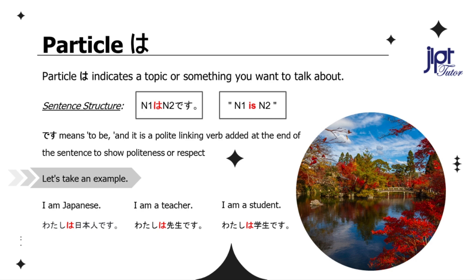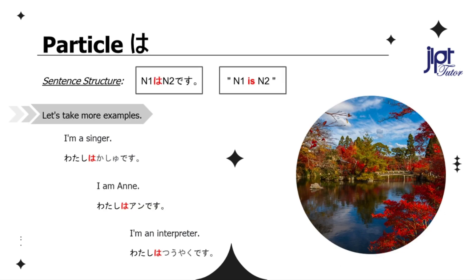Wa in the sentence is showing that the topic is me — it's something about me, like 'I am Japanese' is all about me. Watashi means 'I,' and wa indicates the topic. Let's learn some other similar examples. I am a teacher: Watashi wa sensei desu. I am a student: Watashi wa gakusei desu. You can make similar sentences using the same technique on your own. Try making some right away.